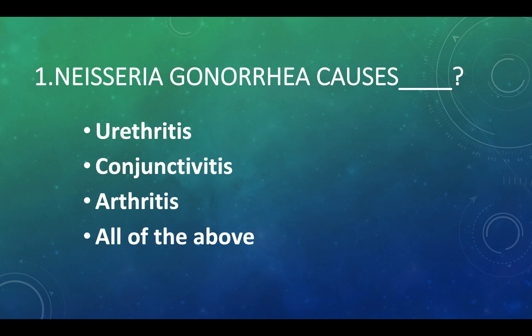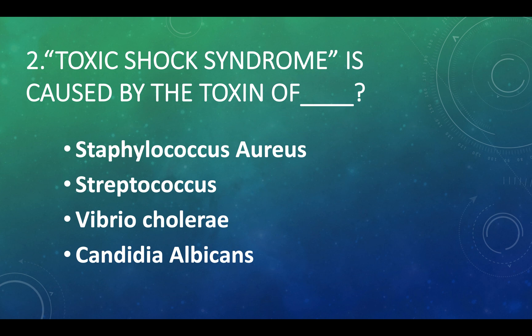Neisseria gonorrhea causes: Option A — urethritis, Option B — conjunctivitis, Option C — arthritis, Option D — all of the above. Answer: Option D, all of the above.